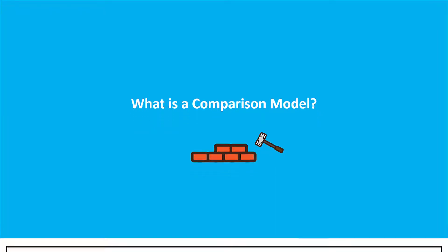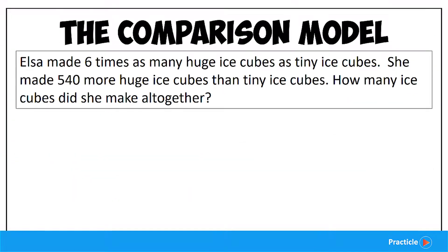So let's take a look at this example question and see how the comparison model works. Elsa made six times as many huge ice cubes as tiny ice cubes. She made 540 more huge ice cubes than tiny ice cubes. How many ice cubes did she make altogether?